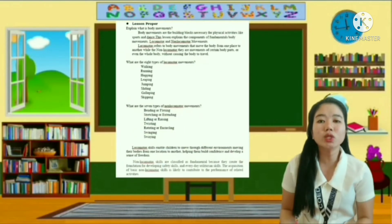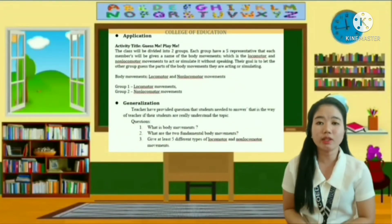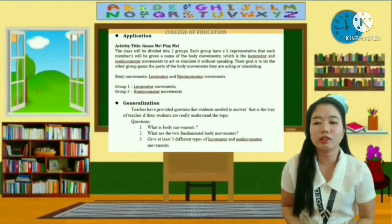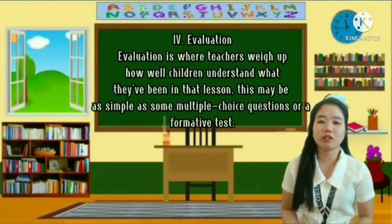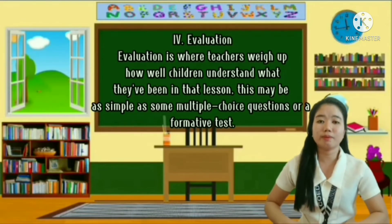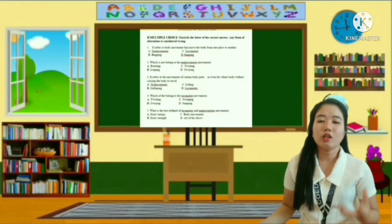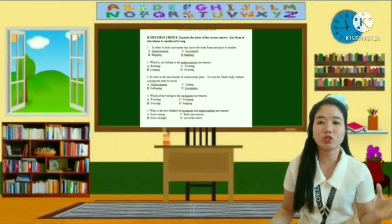So for the lesson proper, it serves as the whole discussion of the lesson. And for application, the teacher will provide some activities that help learners apply their learning to a new situation or context beyond the lesson and connect it to their own lives. So for generalization, making generalizations about the lesson will conclude the lesson by asking questions that will help students crystallize their learning. So for evaluation, the teacher weighs up how well children understand what they've been taught in that lesson. It may be as simple as some multiple choice questions or a formative test — you can conduct an evaluation in the form of a formative test consisting of 5 to 10 items, multiple choice questions, after the lesson's end. We can determine the mastery of the students' learning.